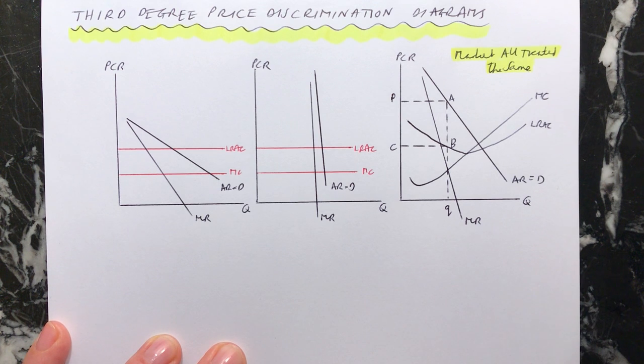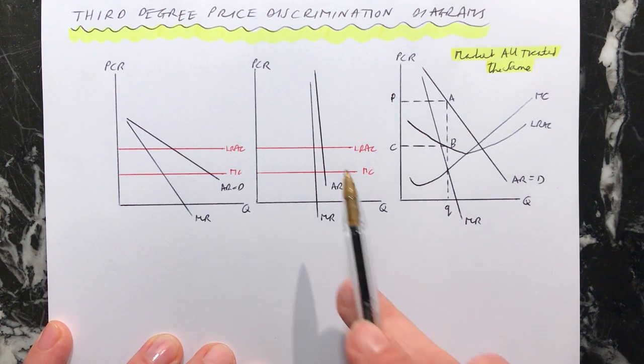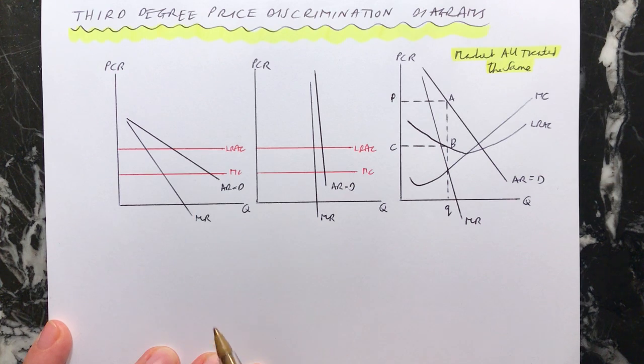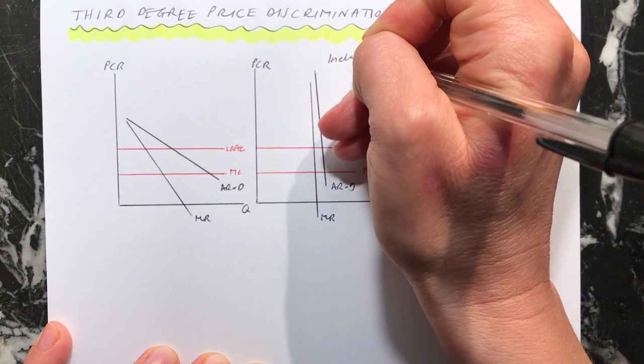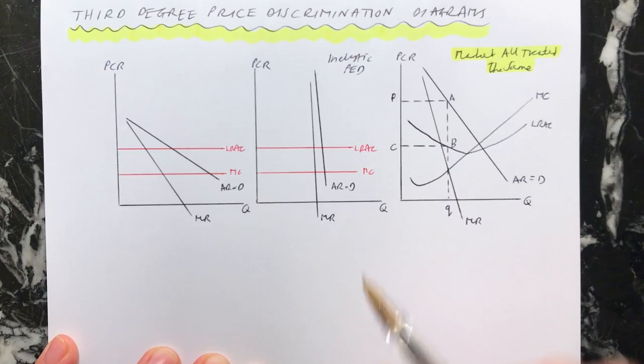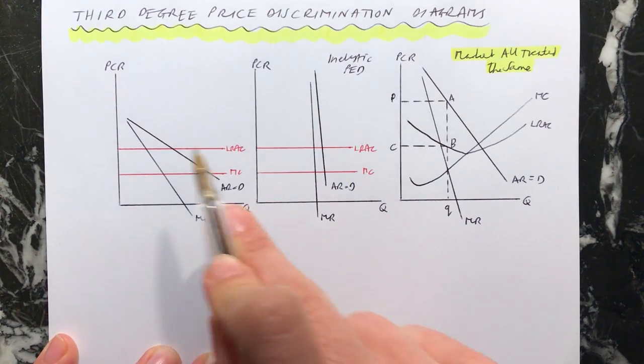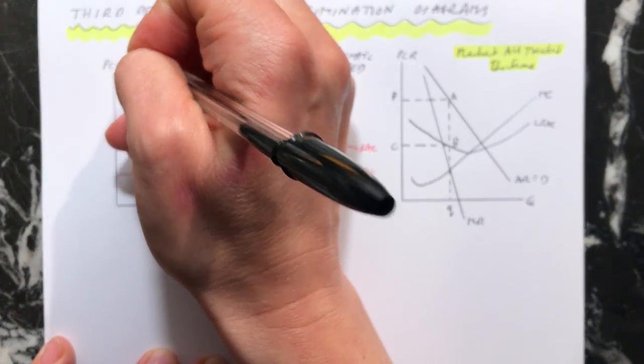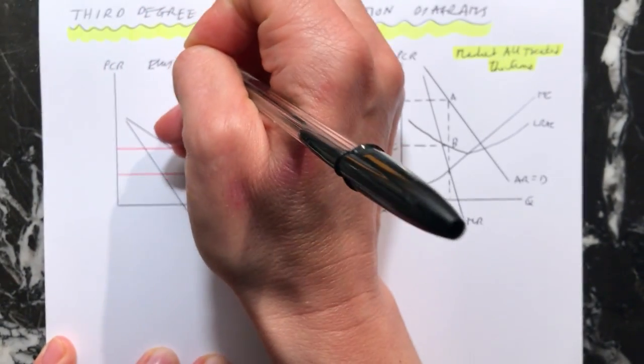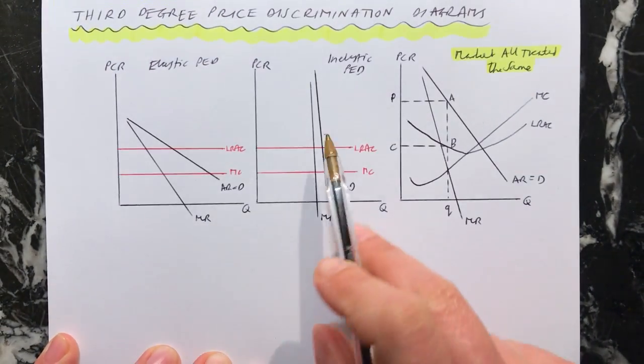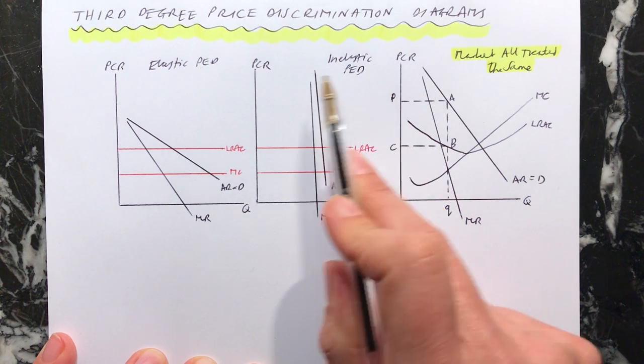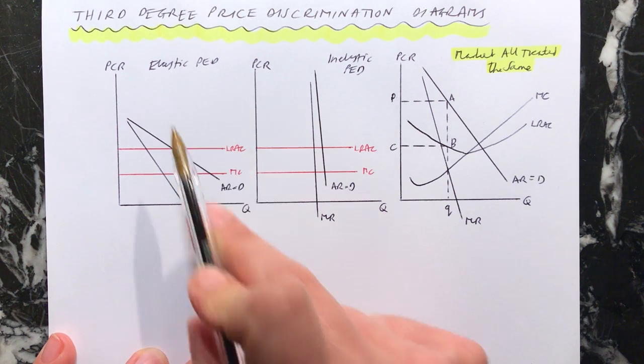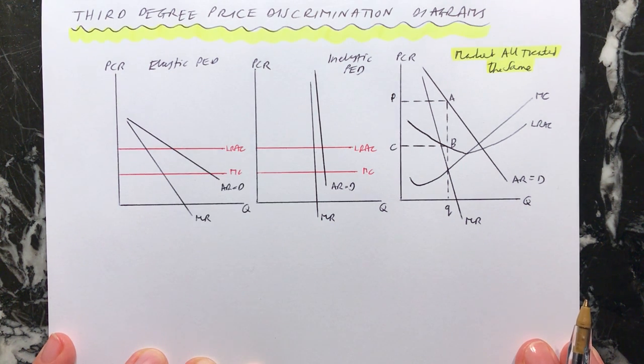What we can then draw is two other situations where we're actually going to charge a different price to these different customers who have got different PED. So these are the consumers with inelastic PED, relatively inelastic, looks like an I. And here these consumers have relatively elastic PED. So as in the other video, this for instance might be people who are working and have got quite high incomes. These people might be students or pensioners and have more elastic PED. They're more sensitive to price.